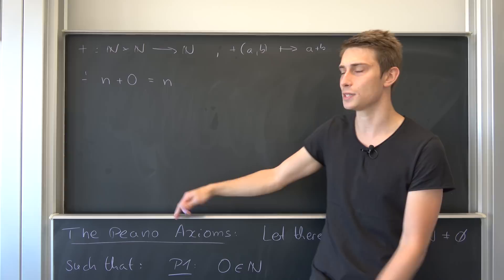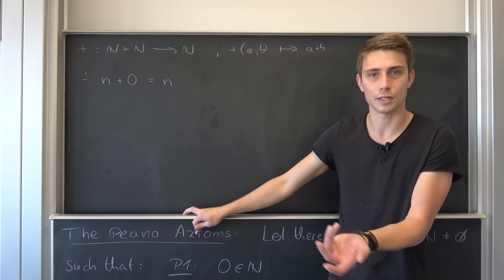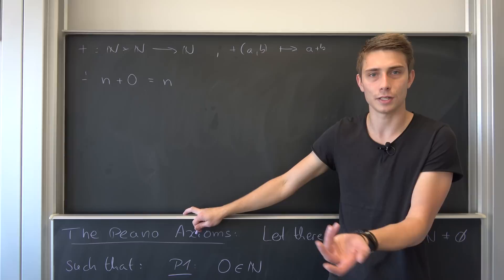Well, the first rule is just if we take a number N and add zero to it, well we just end up with the number itself. That's cool. Yeah, it does make sense, and this holds for all N element of natural numbers.